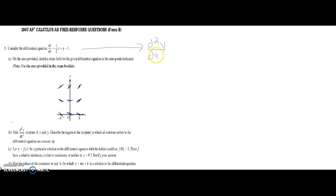d2y over dx squared is going to equal—the slope is one-half x, the derivative of one-half x is one-half, the derivative of y is dy over dx.